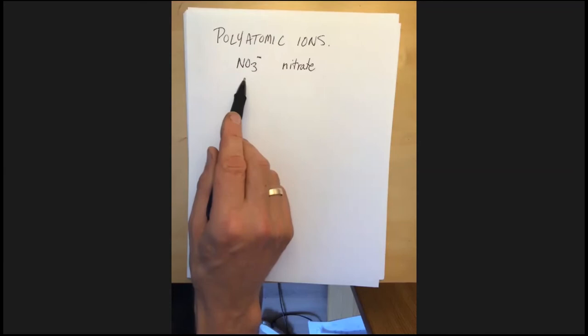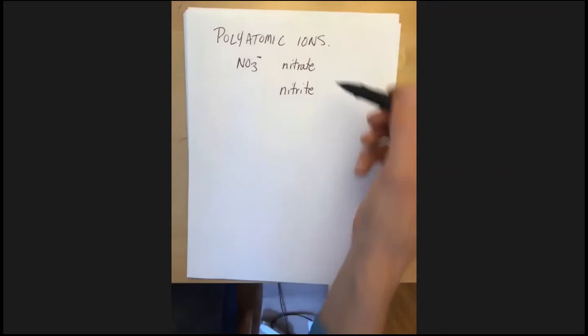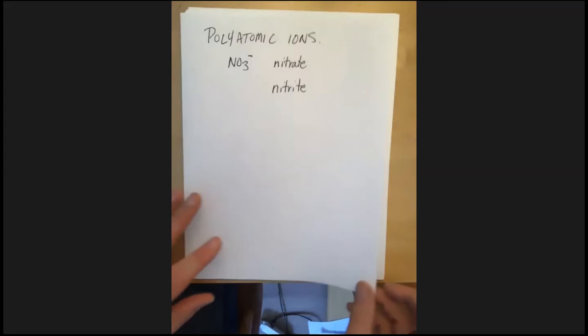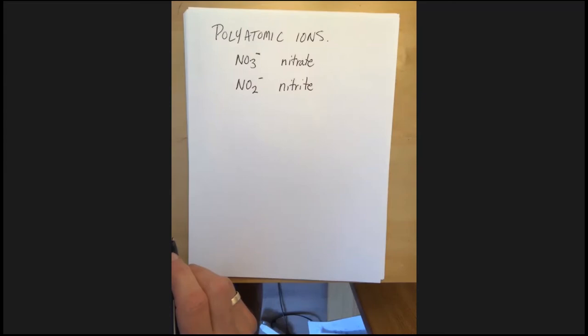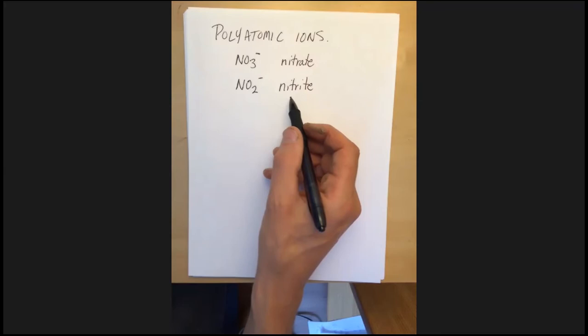And right now we're not going to worry about why it's NO3 or how the oxygens are bonded to the nitrogen at all. All we really need to worry about at this point is that those four atoms, one nitrogen, three oxygens, will bond in a way through some sharing of electrons such that they have a minus one charge. And that's one that's going to come back over and over and over again. So it's probably a polyatomic ion that is worth memorizing, committing to memory, using enough until you know it. So was that on your list? Yes. Nitrate was definitely on my list.